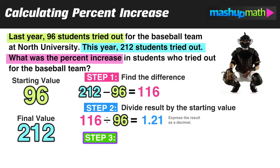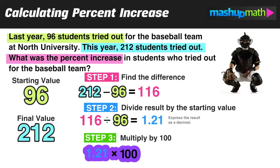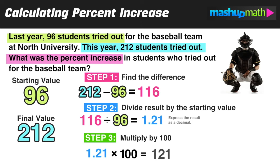Finally, we take that result from step two, 1.21, and multiply it by 100. So 1.21 times 100 equals 121, meaning there was a 121% increase in the number of students who tried out. It's totally fine to have percent increases of 100% or more — a 100% increase just means the starting value doubled. Any time you're doubling or more between the starting and final value, your percent increase will be 100% or more.